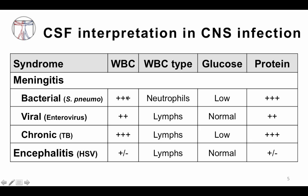Let's look at CSF findings in different types of central nervous system infections. In bacterial meningitis — using Streptococcus pneumoniae as our classic example — you would see very high white blood cells, and they would be neutrophil predominant. That's a very important distinction because many other infections are lymphocyte predominant. The glucose would be low because through this process, glucose is transported out of the cerebral spinal fluid in the setting of inflammation. The protein is also elevated in the setting of inflammation.